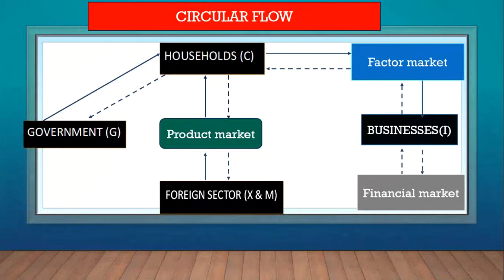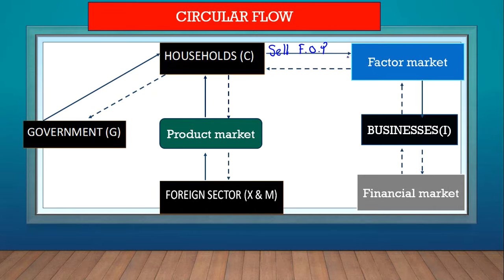Here we'll look at examples of interactions between participants and markets. Between households and businesses, we have the factor market. Households own the four factors of production and sell those factors of production in the factor market. Since factors of production are part of the real flow, the selling of factors of production is indicated by a solid line, and businesses buy those factors of production.